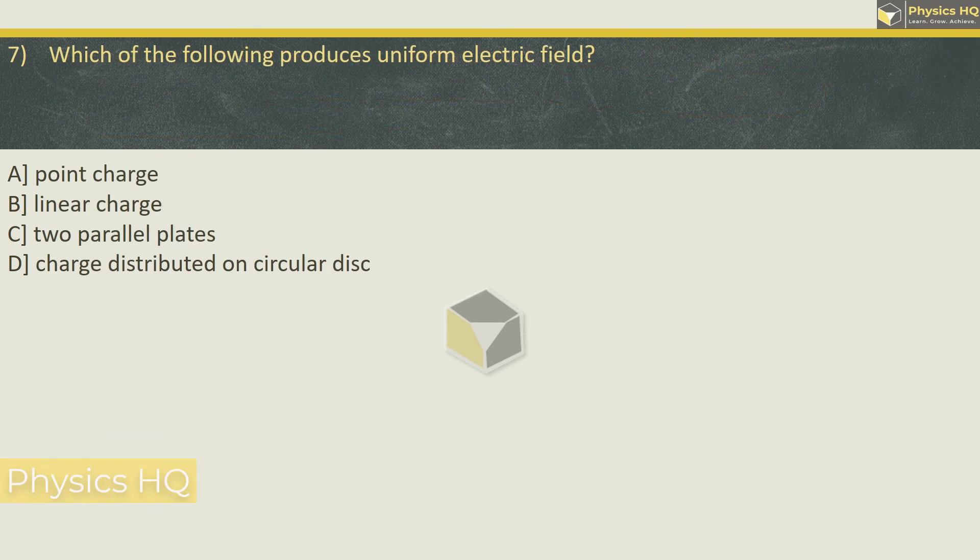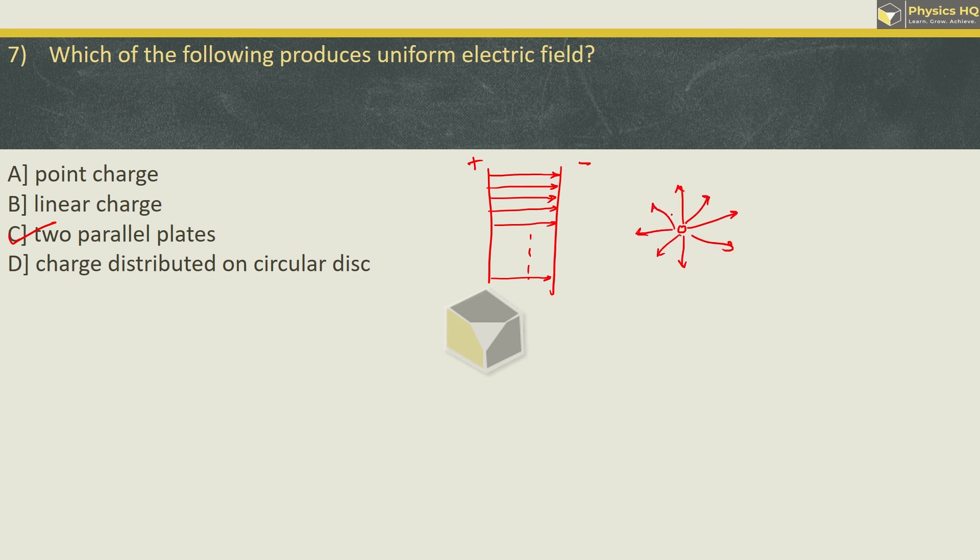Next MCQ. Which of the following produces uniform electric field? The correct option is option C: two parallel plates. If you have two parallel plates, one positively charged and one negatively charged, you will have uniform electric field going from positive plate to negative plate. If you take a point charge, field will spread out and it won't be uniform at all points. Likewise for linear charge or distributed disc, electric field will not be the same.